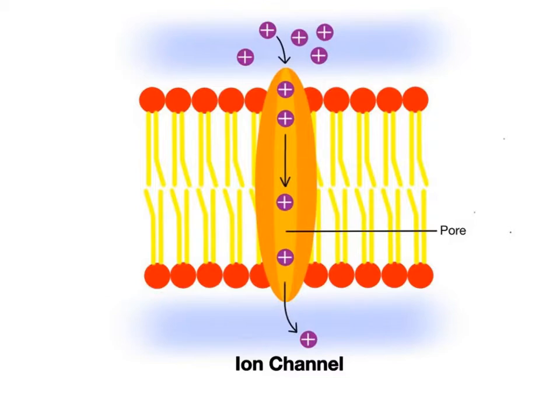For example, there are individual channels for sodium, potassium, and calcium ions, where the protein regulates the transport of only one specific ion.